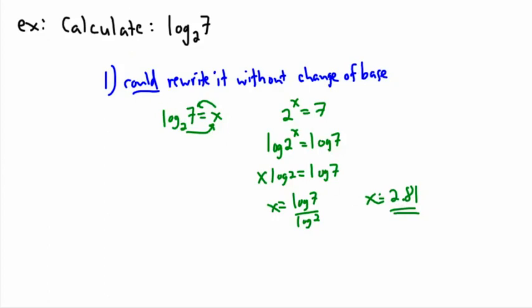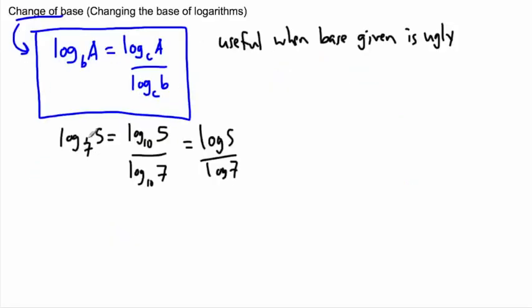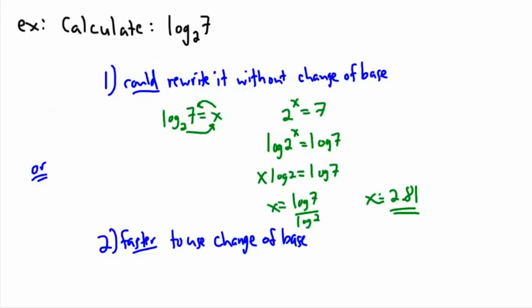That is one way to do it, but I think it's faster to use change of base. The trick with change of base is just recognizing, okay I have an ugly base. What do I do if I have an ugly base? I can do log of this thing divided by log of the ugly base.